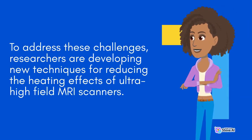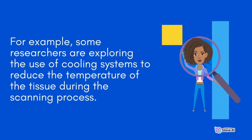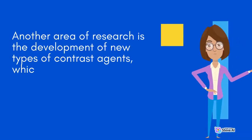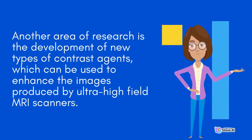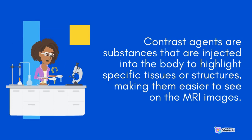To address these challenges, researchers are developing new techniques for reducing the heating effects of ultra-high-field MRI scanners. For example, some researchers are exploring the use of cooling systems to reduce the temperature of the tissue during the scanning process. Another area of research is the development of new types of contrast agents, which can be used to enhance the images produced by ultra-high-field MRI scanners. Contrast agents are substances that are injected into the body to highlight specific tissues or structures, making them easier to see on the MRI images.